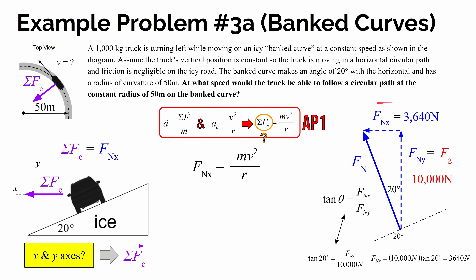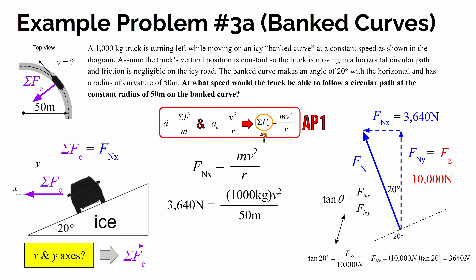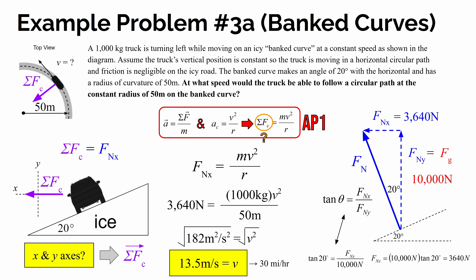So the sum of the forces — the X component of the normal force — is 3,640 newtons, which is the force allowing the truck to follow that curved path at a constant radius of 50 meters. Plugging into our equation: 3,640 N = (1,000 kg × v²) / 50 m. Multiplying each side by 50 and dividing by 1,000 gives v² = 182 m²/s². Taking the square root, v = 13.5 meters per second, which is about 30 miles per hour. At this speed, the truck can follow the circular path of radius 50 meters while maintaining constant vertical height.